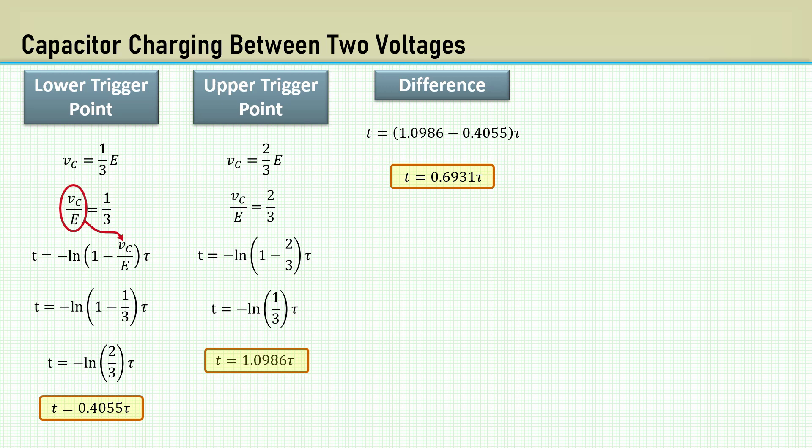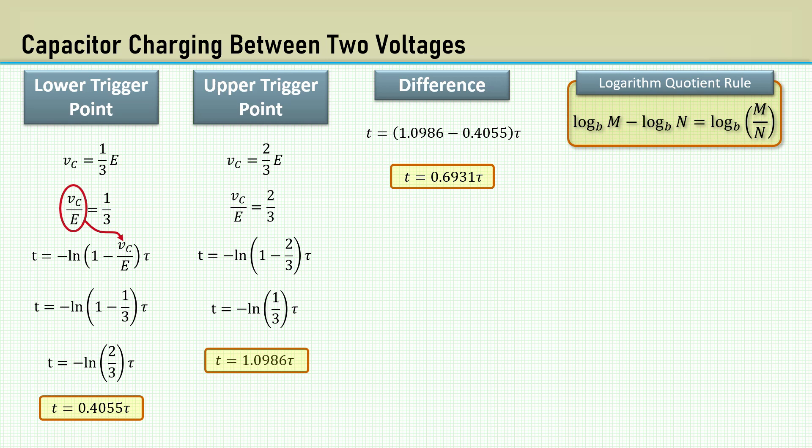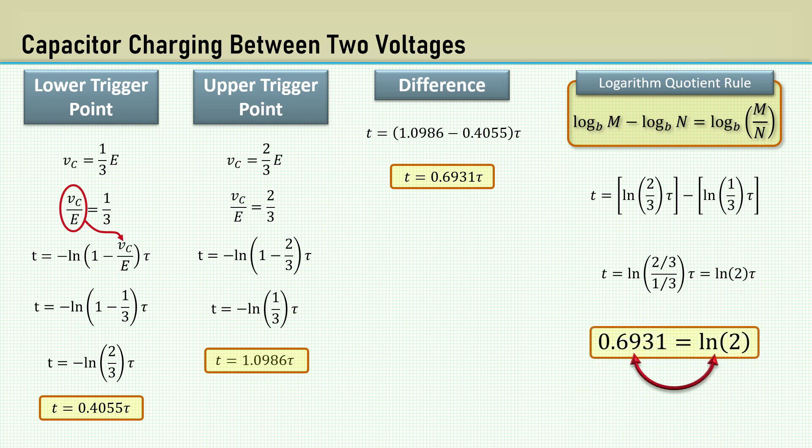Let's find a more meaningful representation for it. We are subtracting the log of two different numbers. We can use the logarithm quotient rule to change subtraction into division. The log of M minus the log of N equals the log of M over N, provided that all the log functions are the same base. Here's the subtracted form, and now the quotient form gives us the natural log of 2. So anytime we need to use the 0.693 constant, we can use the natural log of 2.